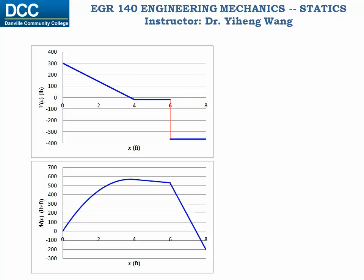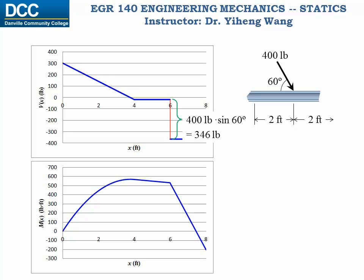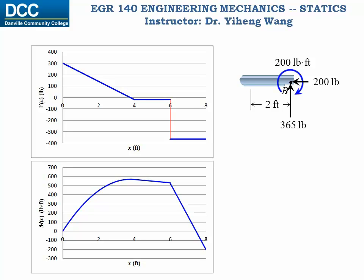You might be wondering what happens at a certain location on the diagram. At that location, there is a concentrated load applied, and that corresponds to a step change in the shear force diagram with a magnitude equal to the vertical component of the applied force — 346 pounds. And also at point B we have another concentrated load applied, and on the shear force diagram at that location there is another step change with a magnitude of 365 pounds that returns the curve back to 0.